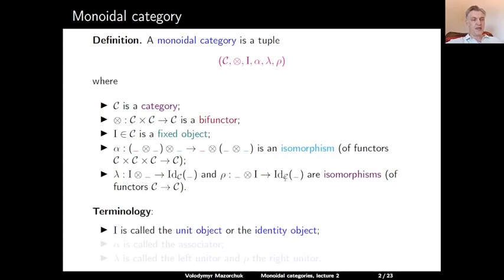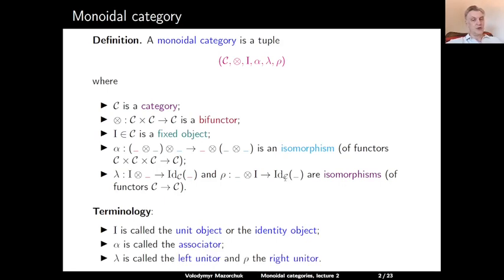Terminology: I is called the unit object or the identity object. Alpha is called the associator. Lambda and rho are called uniters — lambda is the left uniter and rho is the right uniter.